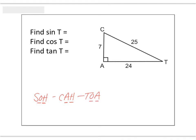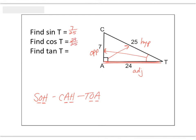Go ahead and pause this slide and try to find the sine of T, the cosine of T, and the tangent of T. We're working with angle T, so opposite of angle T is 7. The hypotenuse is the longest side — it's 25, and it's also across from the 90-degree corner. That leaves 24 to be the adjacent side. Adjacent sides always come up and touch the angle, but it's the other side that touches the angle. So sine of T is 7 over 25, cosine of T is 24 over 25, and tangent is 7 over 24.